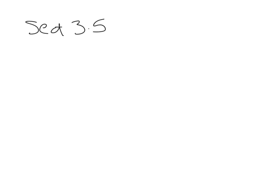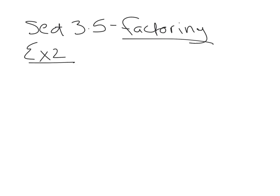We're going to do section 3.5 in the Intermediate Algebra book, which is a factoring review. This is just going to be a review — I'm not going to do every example in this section because there are 28 examples. If you need a more detailed review, I will link some other videos in the description below. We're going to start with example 2. The directions for all these examples are to factor.